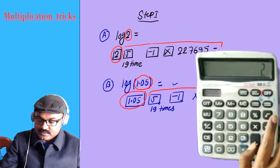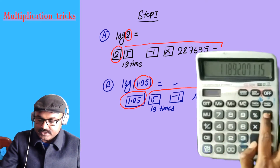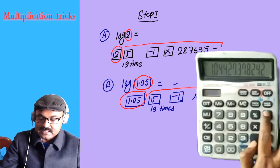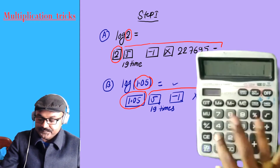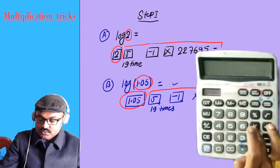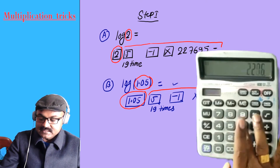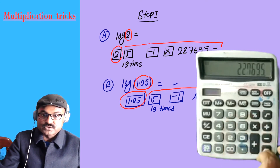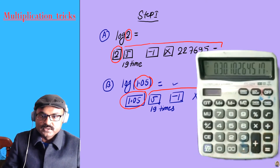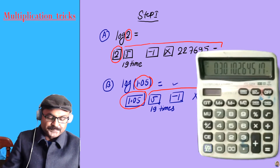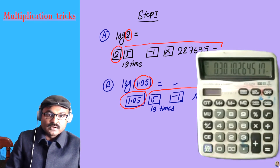This is square root pressed 19 times: 1, 2, 3, 4, 5, 6, 7, 8, 9, 10, 11, 12, 13, 14, 15, 16, 17, 18, 19 — then minus 1 into 2.27695, and then equal to. The result is 0.3010. Log 2 value is 0.3010.